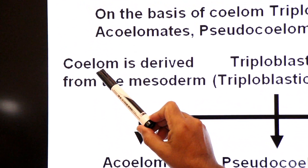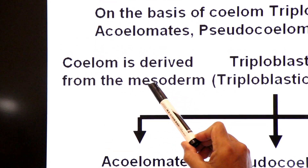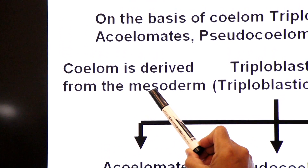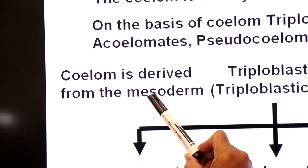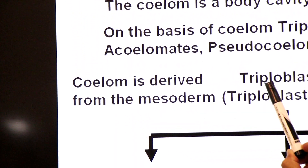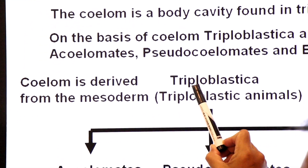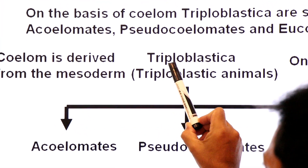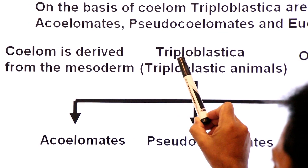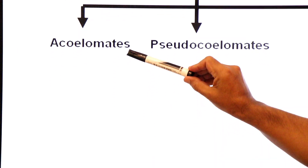What is the origin of coelom? Coelom is derived from mesoderm, and mesoderm is found in Triploblastic Animals. So first of all we will discuss the groups of Triploblastica.